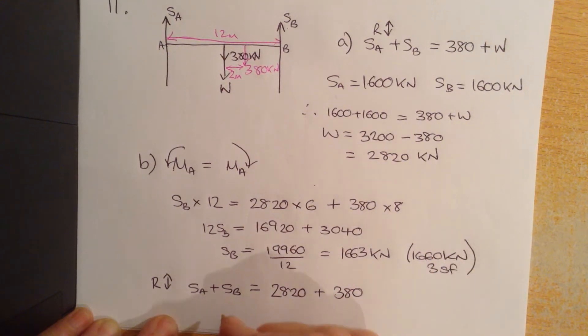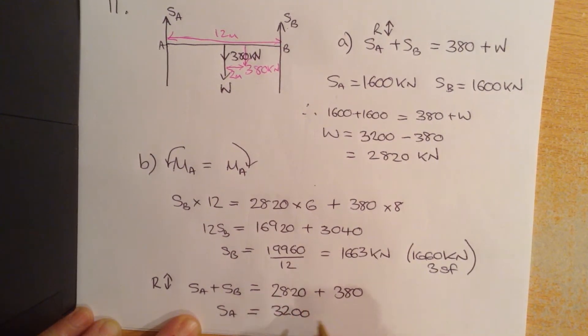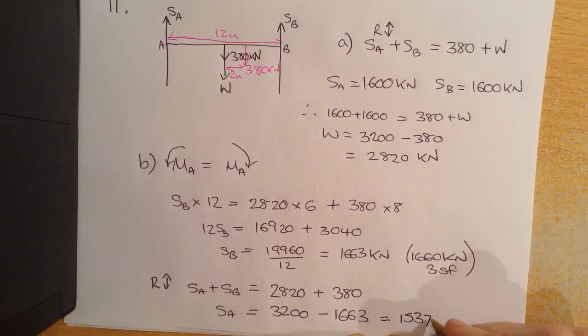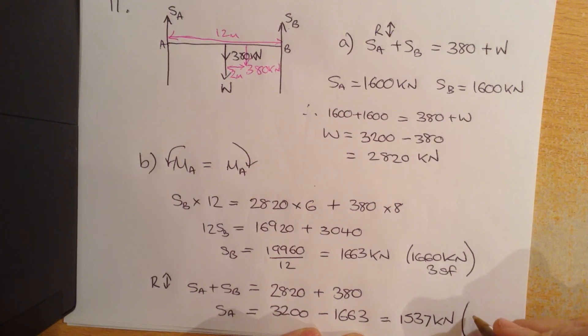is going to be equal to 3200, that's those two added together, minus SB 1663, which is going to be equal to 1537 kilonewtons, or to do this to 3 sig figs, 1540 kilonewtons.